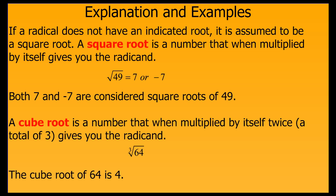If a radical does not have an indicated root, it is assumed to be a square root. A square root is a number that, when multiplied by itself, gives you the radicand. For example, the square root of 49 is 7, or negative 7.